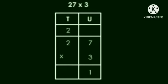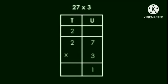Next, starting from the units place. 7 into 3, 21. So, 21 means 2 tens and 1 unit. So, we will carry over 2 tens to the 10s place.